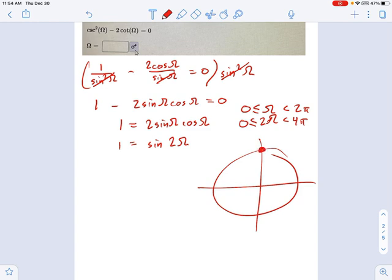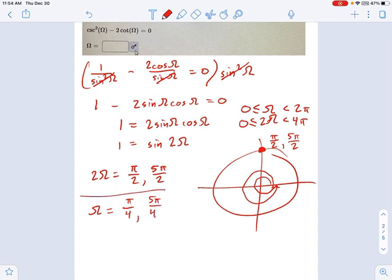So my two solutions are pi over two, the first time you go around the circle, and the second time you go around the circle, you hit five pi over two. So in other words, two omega equals pi over two and five pi over two. That means omega equals pi over four and five pi over four. Those are our solutions.